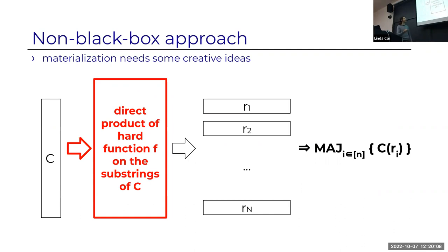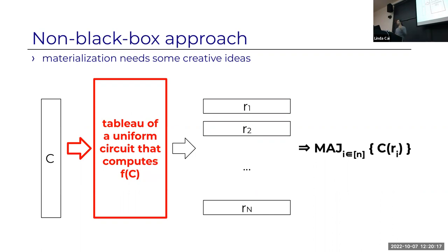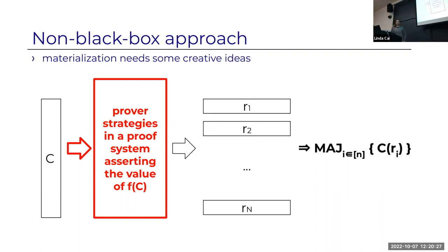To materialize this, we need creative ideas, and there have been several new ones in the last few years. What is this function f? For example, the string could be a direct product of a hard function on substrings. Or think of f as a hard function, and take the string to be the computational history of the hard function—that should also be hard. Or f could be a hard function, and take the string to be the prover strategies in an efficient proof system. There are lots of things you can do—you're not stuck to just evaluating the hard function.